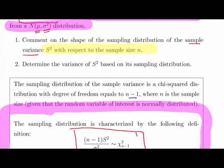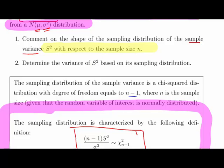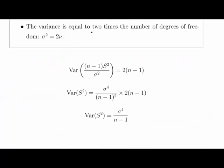Just actually, let's see what the question is: determine the variance of s squared based on its sampling distribution. Okay, I just took a quick pause there for a second. Anyway, so what we have here is a chi-squared random variable. And we know that the variance of this is equal to two times the degrees of freedom.